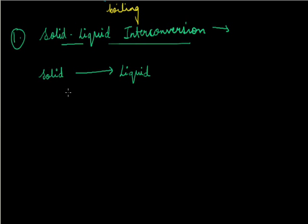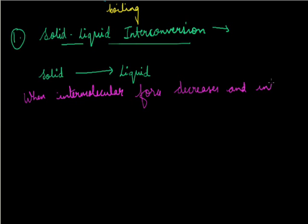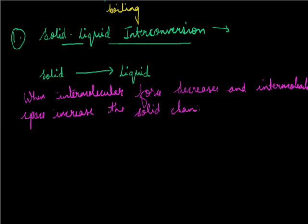We can say that due to the change in properties of the solid — that is, the intermolecular force of attraction and intermolecular space — the state of the substance changes. When intermolecular force decreases and intermolecular space increases, the state changes. This also causes changes in its shape, volume, and related properties. We will be discussing how this happens.